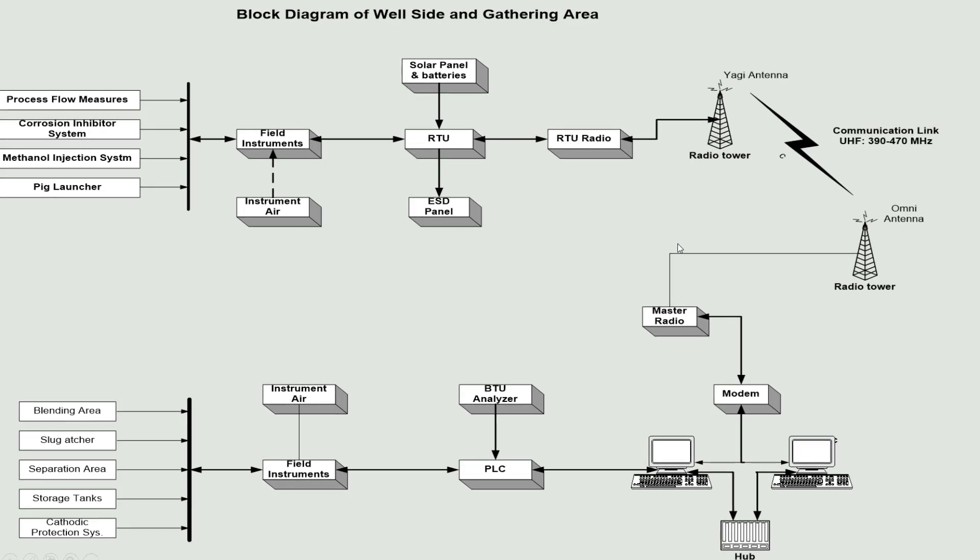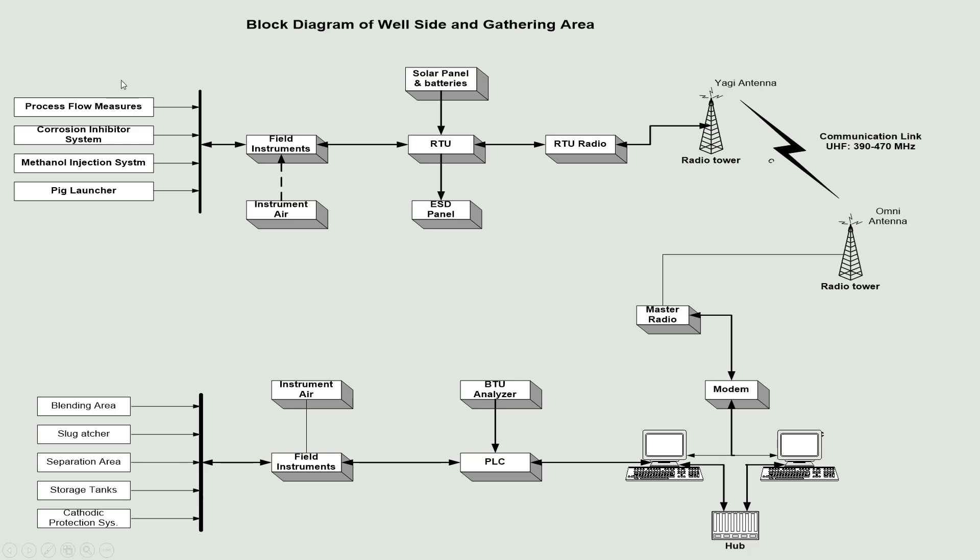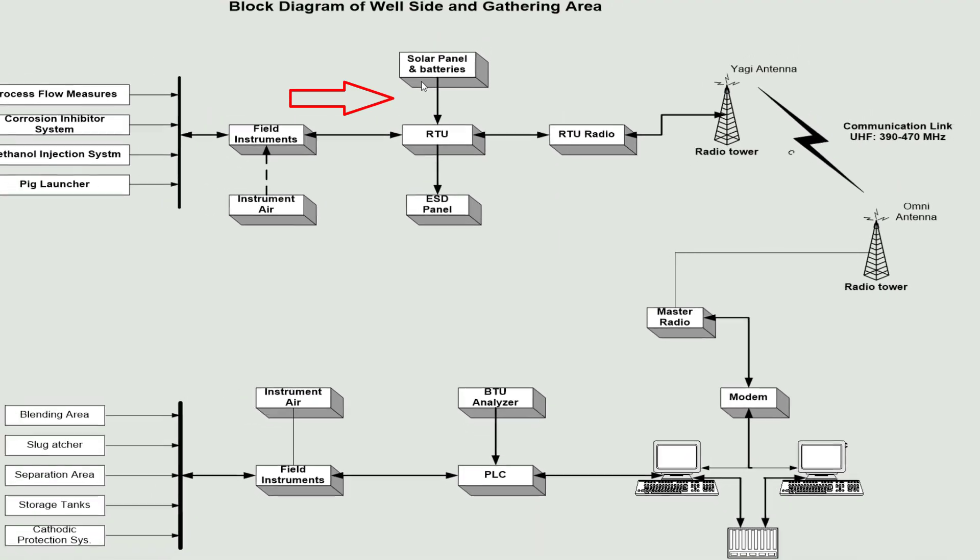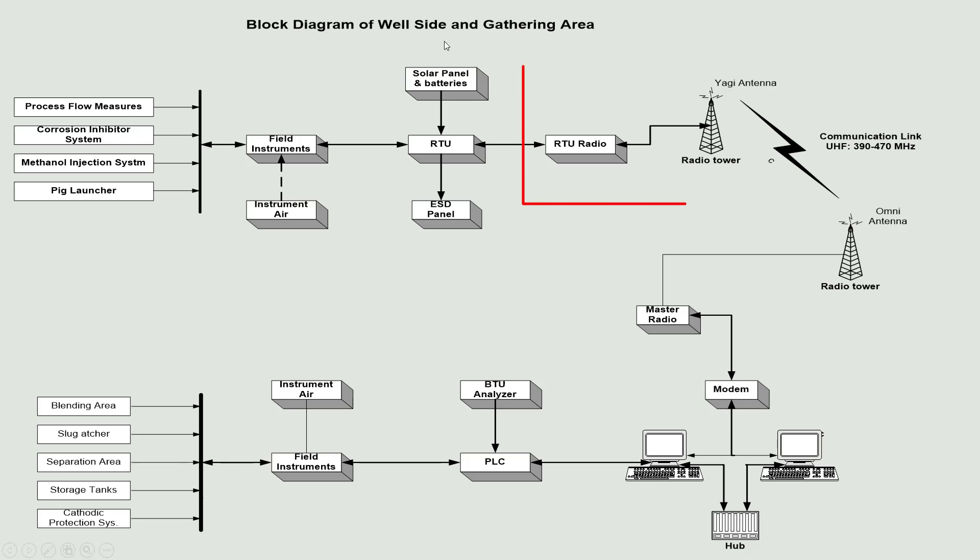Both types of RTUs play a crucial role in ensuring that data from remote locations reaches the central control system efficiently. They use various communication methods such as satellite, radio waves, or cellular networks to send the collected data to the central SCADA system. Here, a radio RTU is stationed to facilitate the transmission of collected data. Through radio wave communication or a radio tower, data is transmitted. A Yagi antenna is installed for this purpose, serving as a medium for radio wave communication.